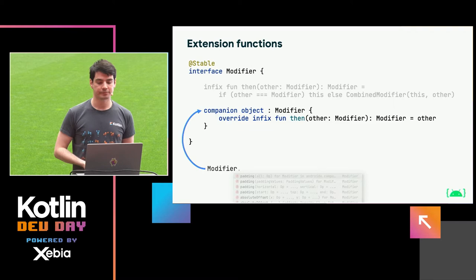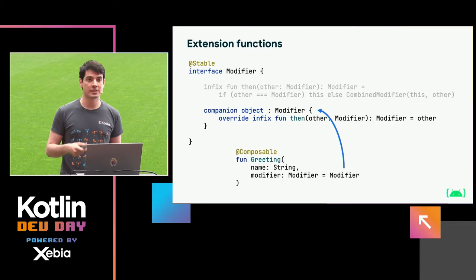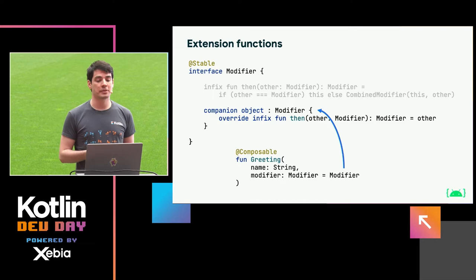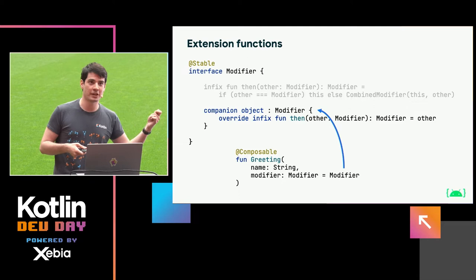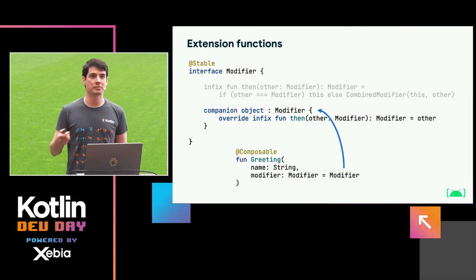This empty companion object of modifier is also used as the default argument by convention for this parameter. So when you're creating your own composables, you can default the modifier parameter to modifier — which is the companion — and that will be no modifications by default. But if someone does provide that argument, you can apply those inside your implementation.